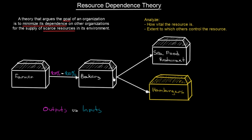But here the situation changes. The bakery gives 90% of its products to the seafood restaurant and only 10% of its products to our hamburger restaurant. But think about inputs: we are getting all of our bread products from the bakery, so this 10% of bakery products represents 100% of our input.